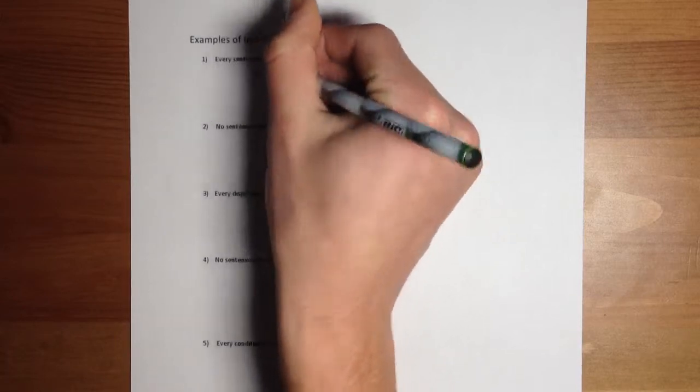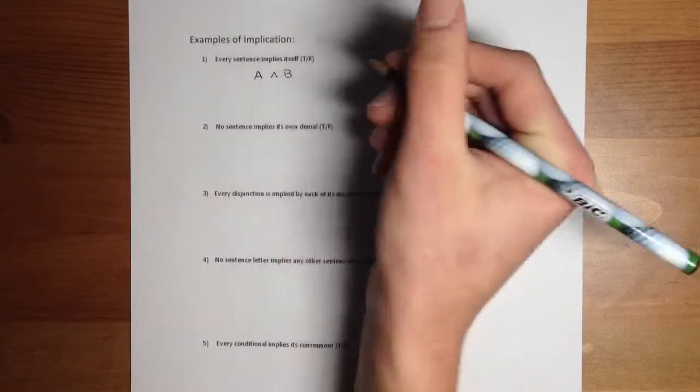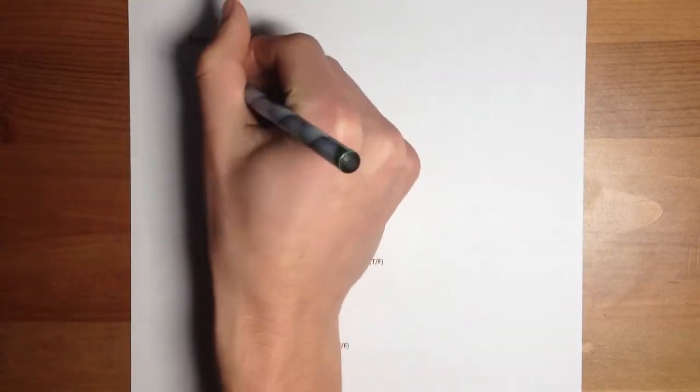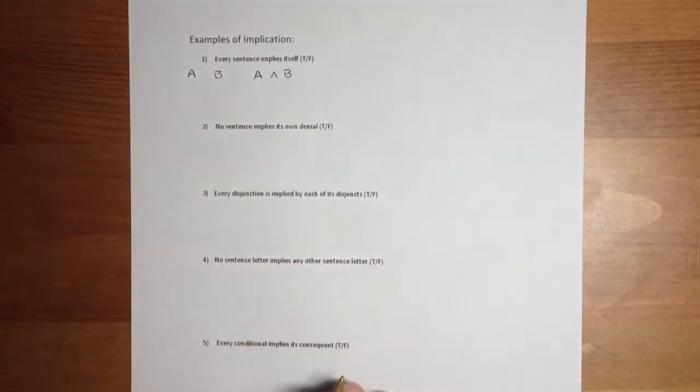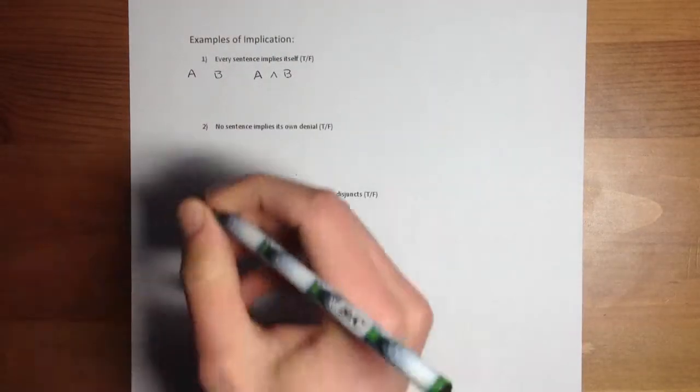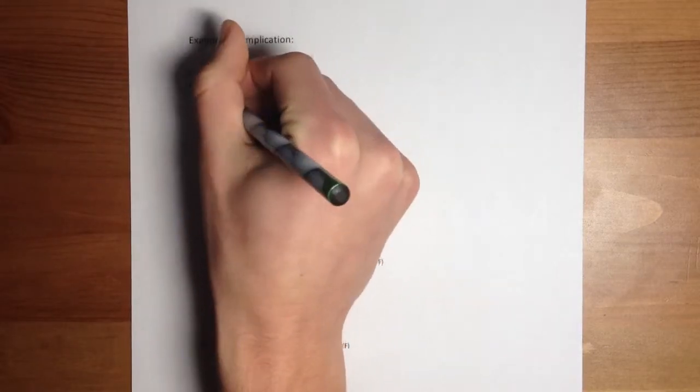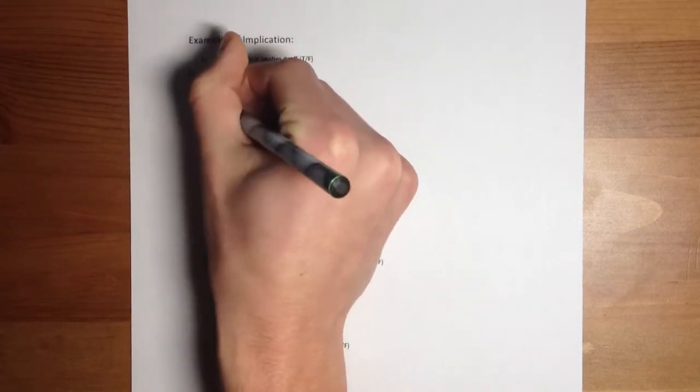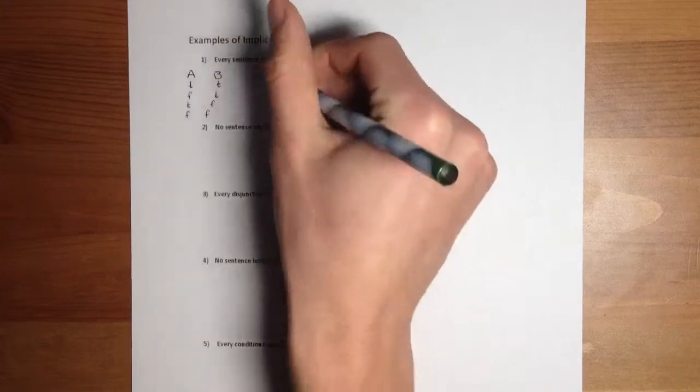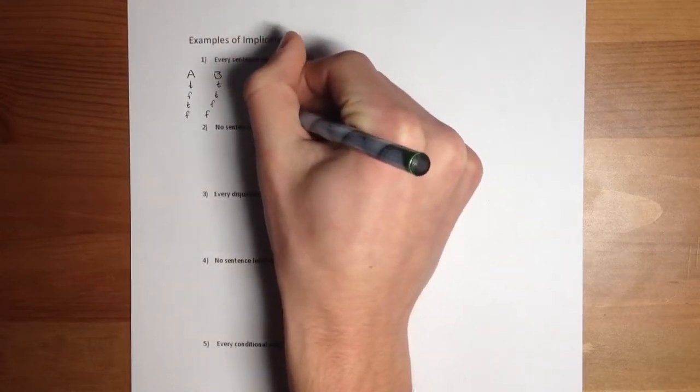So we can look at this sentence here. And for determining if something implies, a sentence implies another sentence, you should really draw a truth table. So that's what we're going to do here.